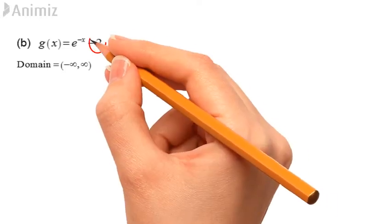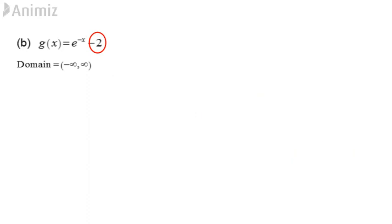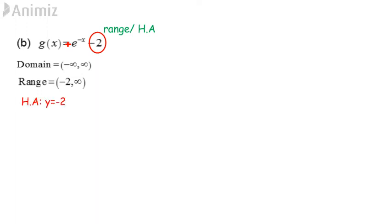The constant given in the function is negative 2. This number gives us hints to find the range. Since this is a positive y function, its range is from negative 2 to positive infinity. The constant also gives us a clue to find the horizontal asymptote: y equals negative 2.